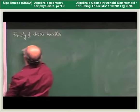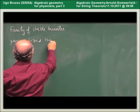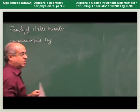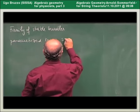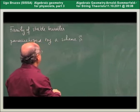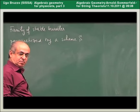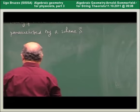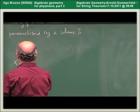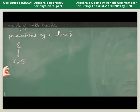We need a notion of a family of stable bundles. A family of stable bundles parametrized by a scheme S is a bundle E on the product X times S such that for every point in the scheme, the restriction to the fiber is a stable bundle with the given fixed Hilbert polynomial.